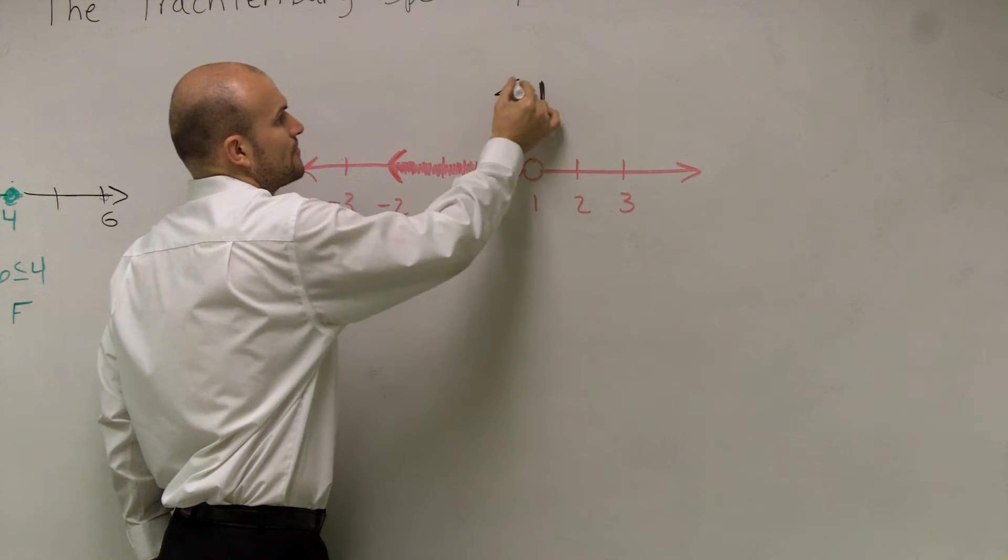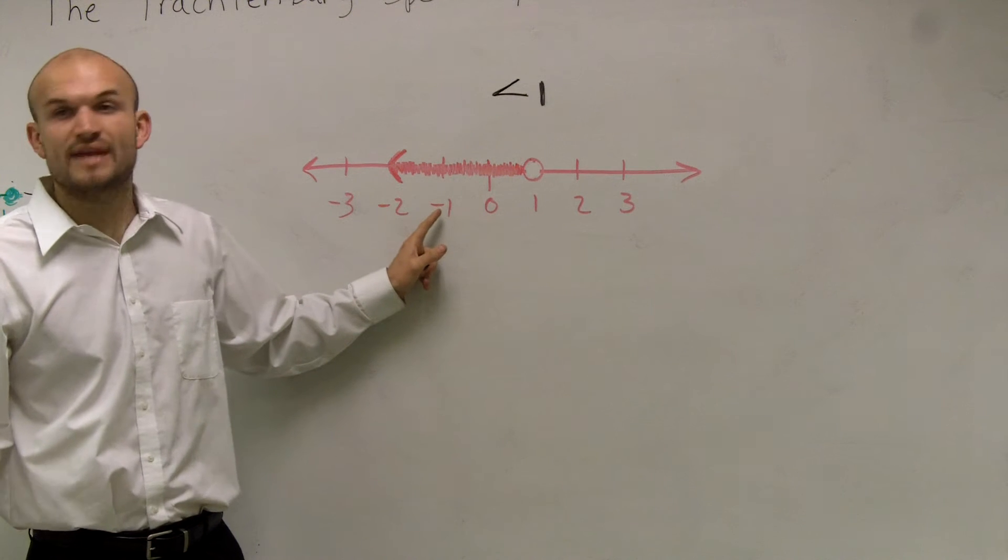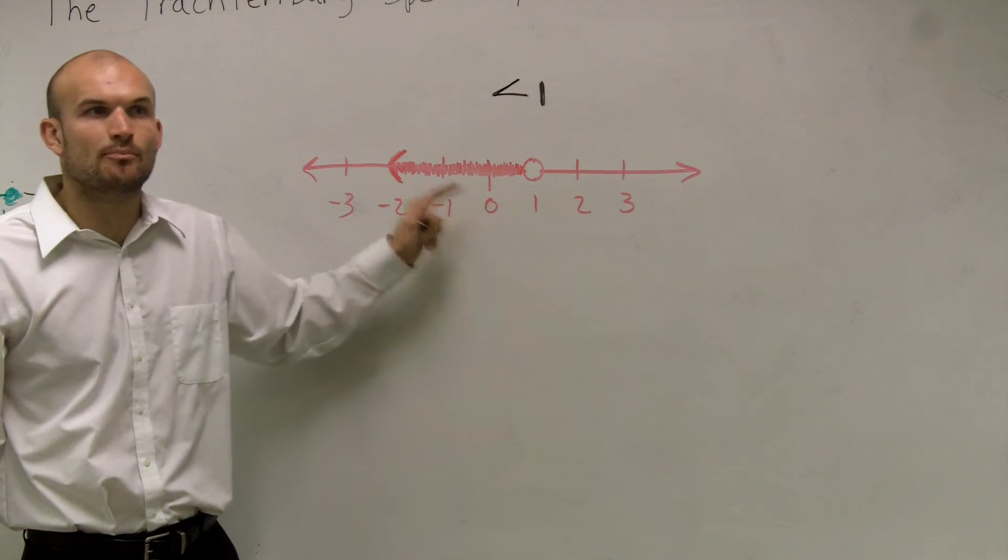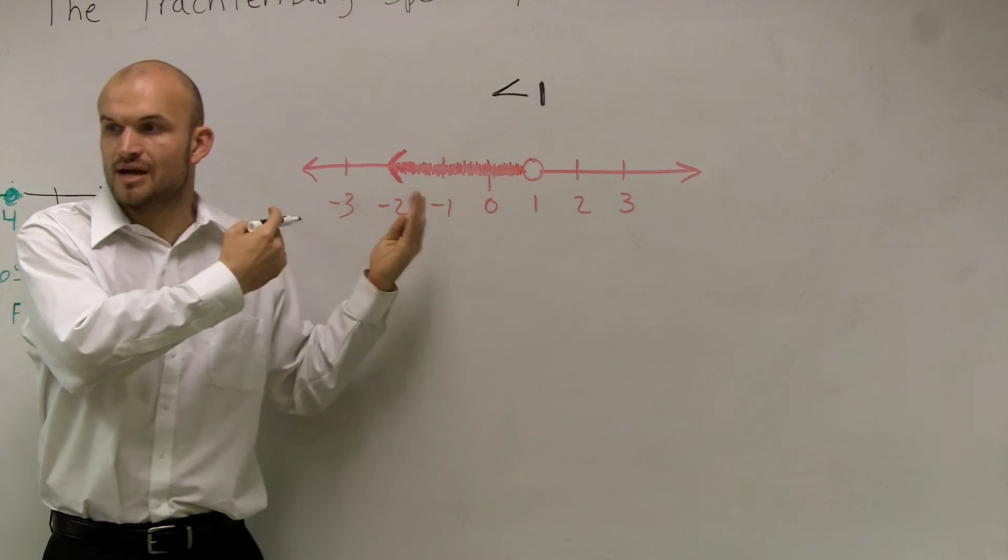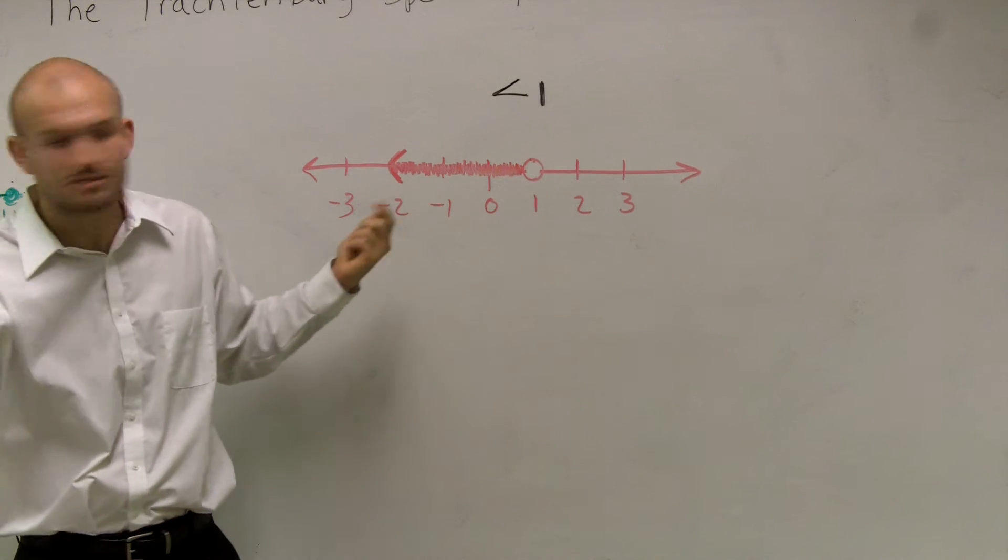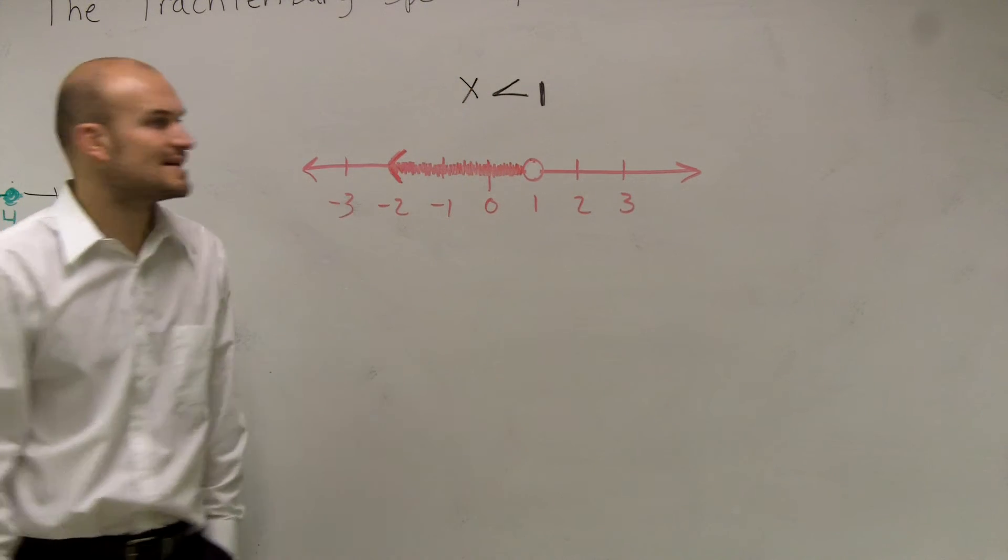So you can draw the less than symbol. Now, we know that 0 is less than, we know that negative 1 is less than. We can't put all these numbers in there. If we want to represent all of the numbers, we have to use a variable. So we can use x. So you can say x is less than 1.